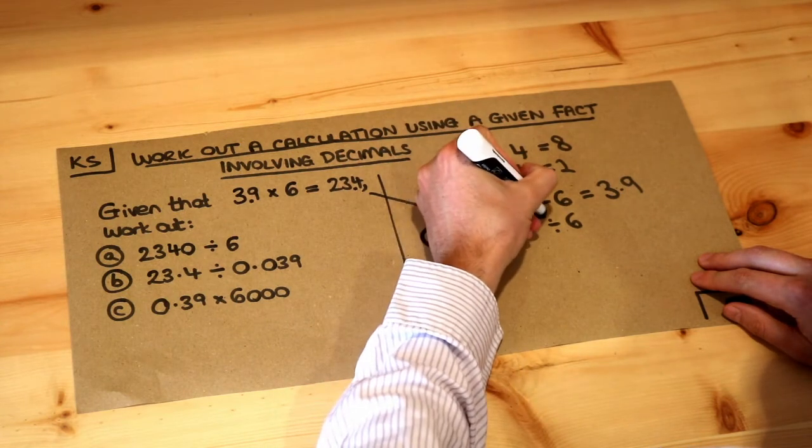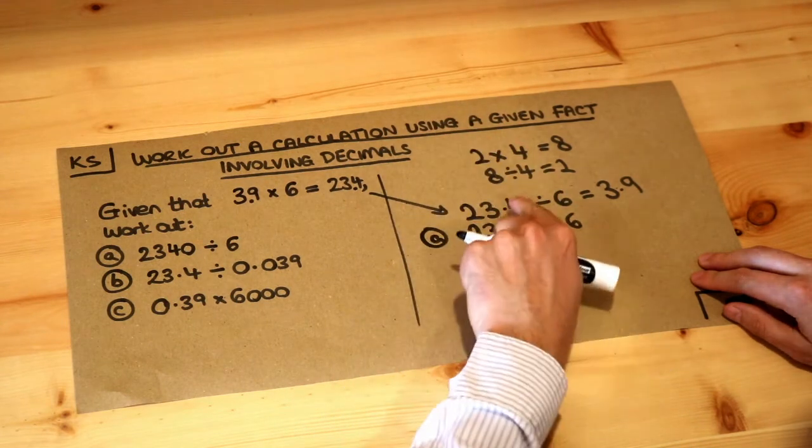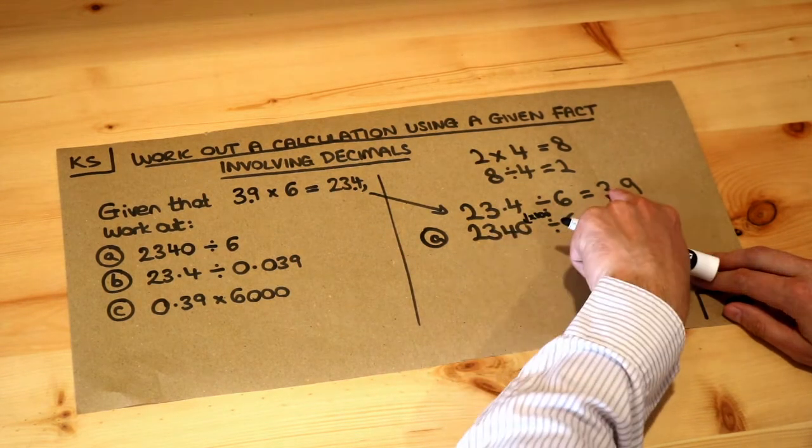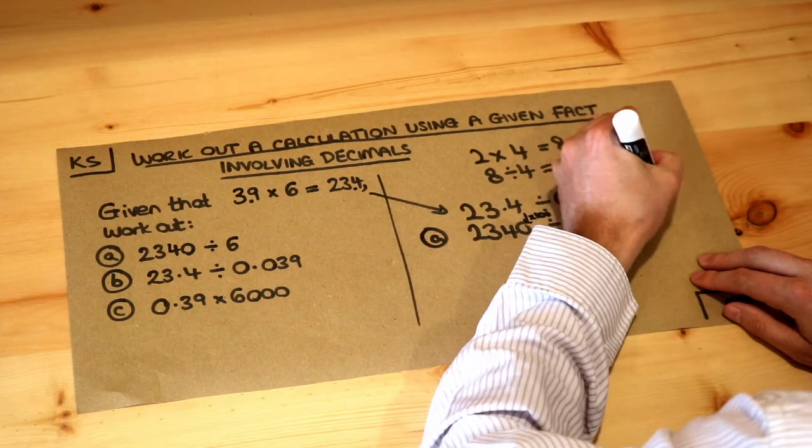And if the number on the left of the division is getting 100 times bigger, then that's going to make the result 100 times bigger as well.